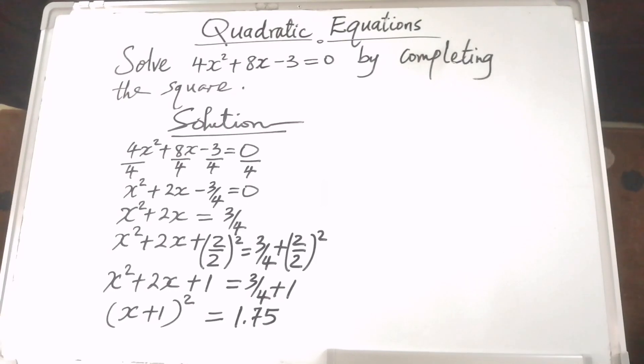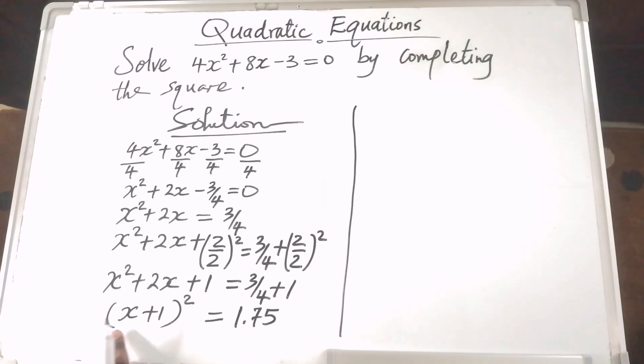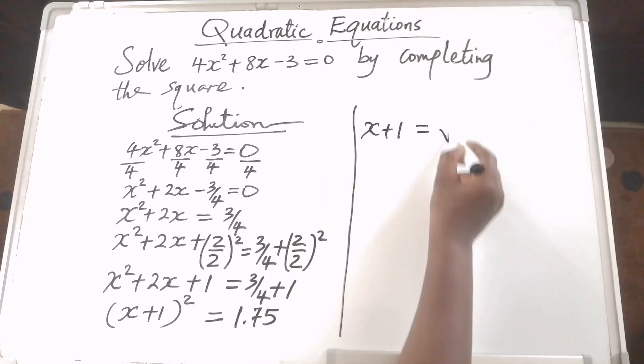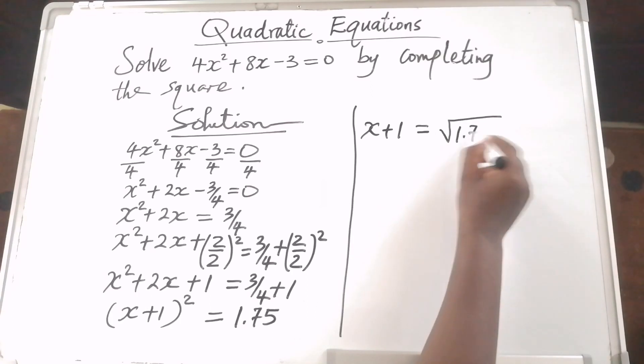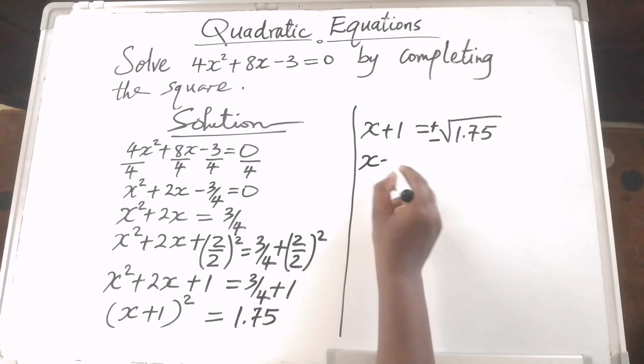Thereafter, we need to find the square root of both sides because here we have x plus 1 squared. The square root of this side will give us x plus 1 equals the square root of 1.75, which is going to be either positive or negative.